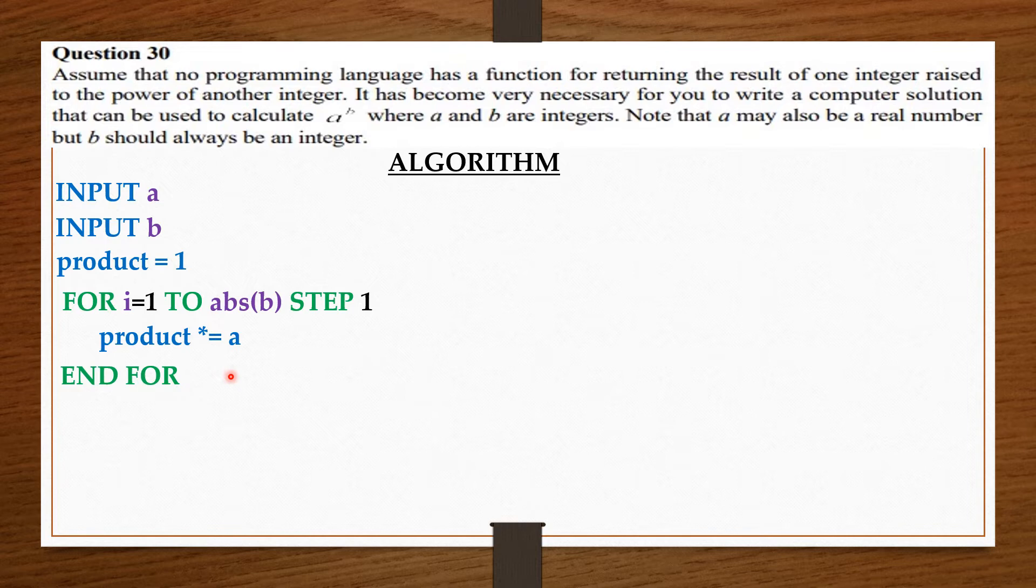Now, you can see here that the b part is only telling us, or the power is only telling us how many times we should multiply a by the product. We know that the product is 1, and any number multiplied by 1 gives the number itself. So, we are just multiplying the number a by itself b times.